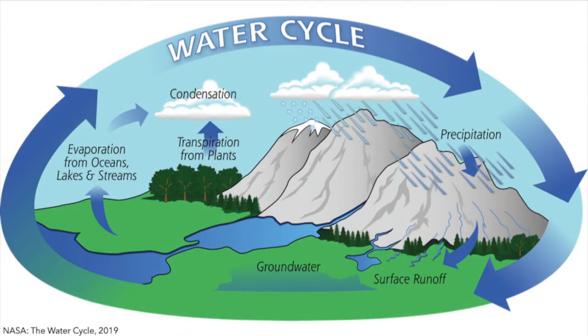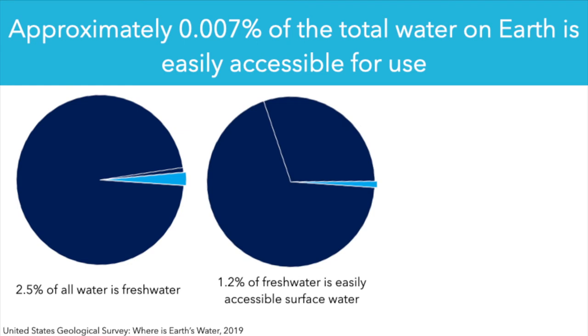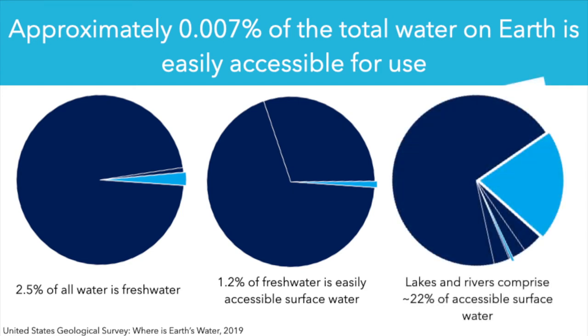One of the best ways to think about this is through the water cycle, which demonstrates where our drinking water and freshwater comes from. We have oceans and saltwater resources, evaporation from lakes, oceans, and streams that condenses into clouds, transpiration from plants, and then precipitation that is collected as surface runoff and eventually contributes to groundwater. It's really that surface runoff and surface water that is our most accessible freshwater resource for drinking and sanitation. Only 0.007% of our total water on Earth is easily accessible for use — about 2.5% of global water is freshwater, of which about 1.2% is accessible surface water, and 22% of that surface water is in lakes and rivers, which is both where we draw water from and where we typically discharge our wastewater.